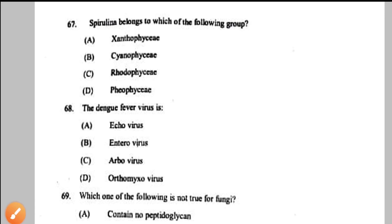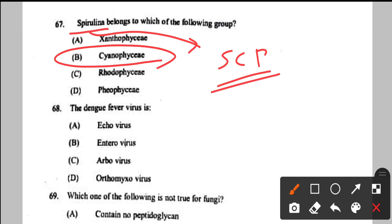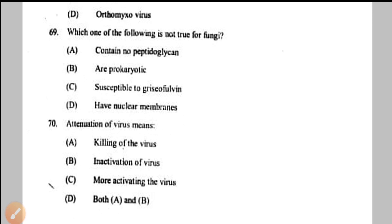Question number 67: Spirulina belongs to which group? Spirulina is a single cell protein source belonging to the group Cyanophyceae — option B. Question number 68: dengue fever virus is — it is an arbovirus, meaning a virus transmitted by an arthropod vector — option C.